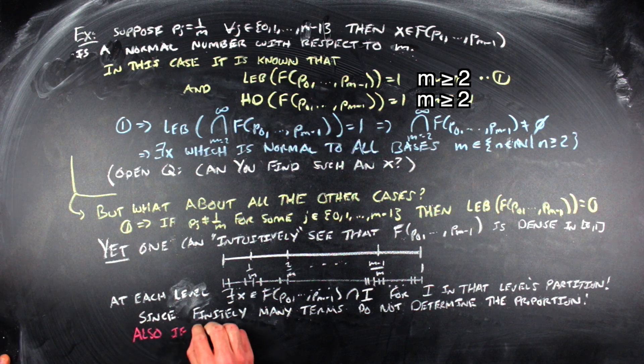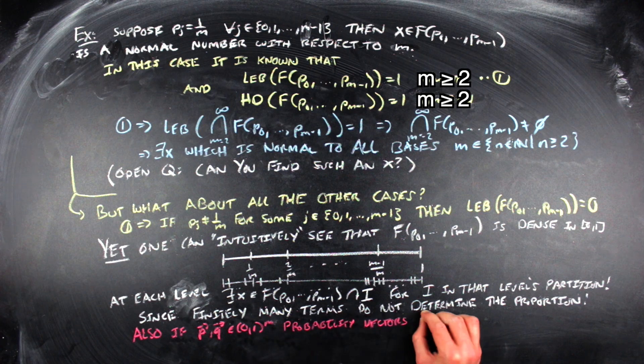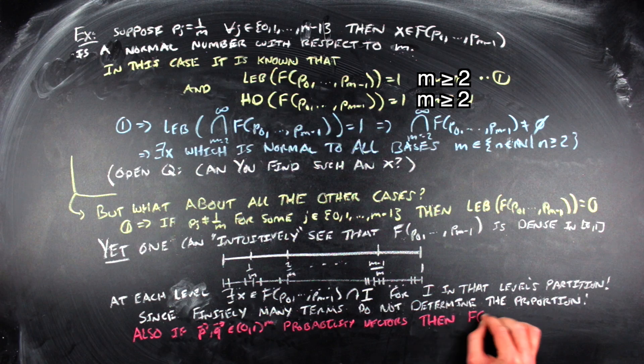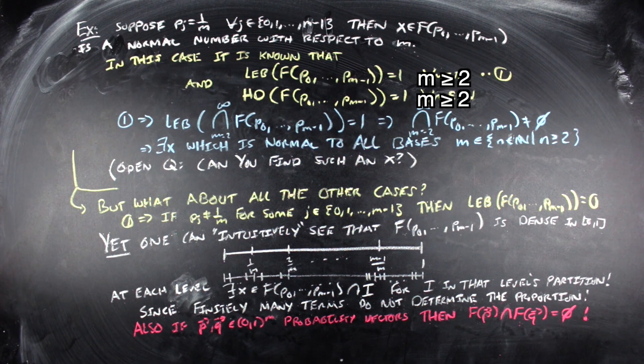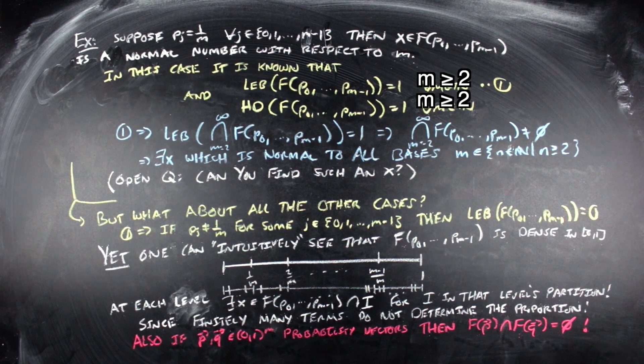The other thing to note is that all of these sets are different. So if you change the probability vector, then you're going to change the proportion that a certain symbol has to achieve in order to be in a set. And since we've eliminated the case where you have repeating M's or repeating zeros because the proportions are never one anywhere, what you're going to end up getting is all of these sets are disjoint from each other.